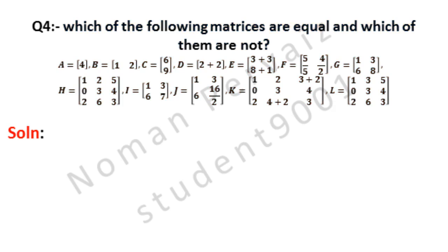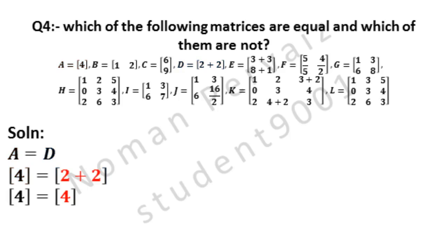Let's see its solution. Matrices A and D are equal. The value of matrix A is 4 as represented by red color. And the value of matrix D is 2 plus 2 as represented by blue color. 2 plus 2 becomes 4. Since the values of both of these matrices are same, both are equal.